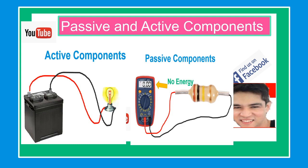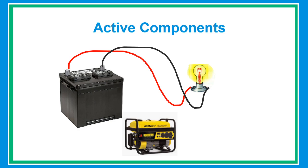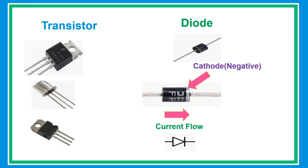One of the active components is the battery. A battery is a device consisting of electrochemical cells used for powering electrical devices such as mobile phones, remote controls, and car batteries.